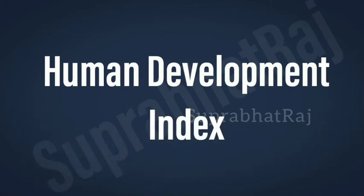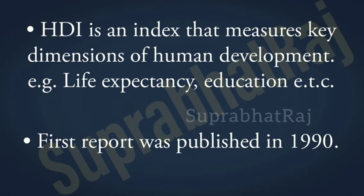Our next topic is Human Development Index. Human Development Index is an index that measures key dimensions of human development. For example, life expectancy, education, etc. यानी, Human Development Index एक ऐसा index है जो human development के main dimensions को measure करता है। First report was published in 1990. यानी, HDI की first report 1990 में publish की गई थी।